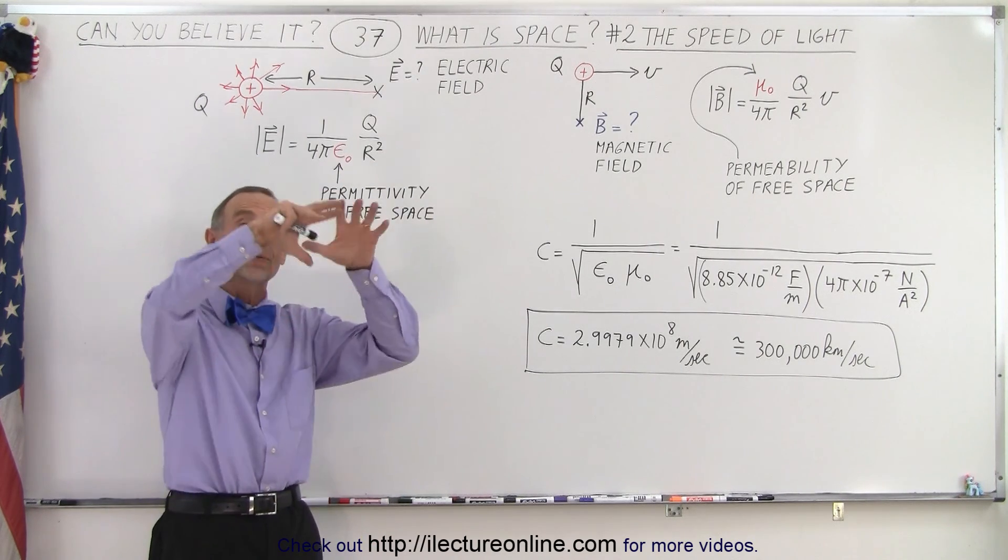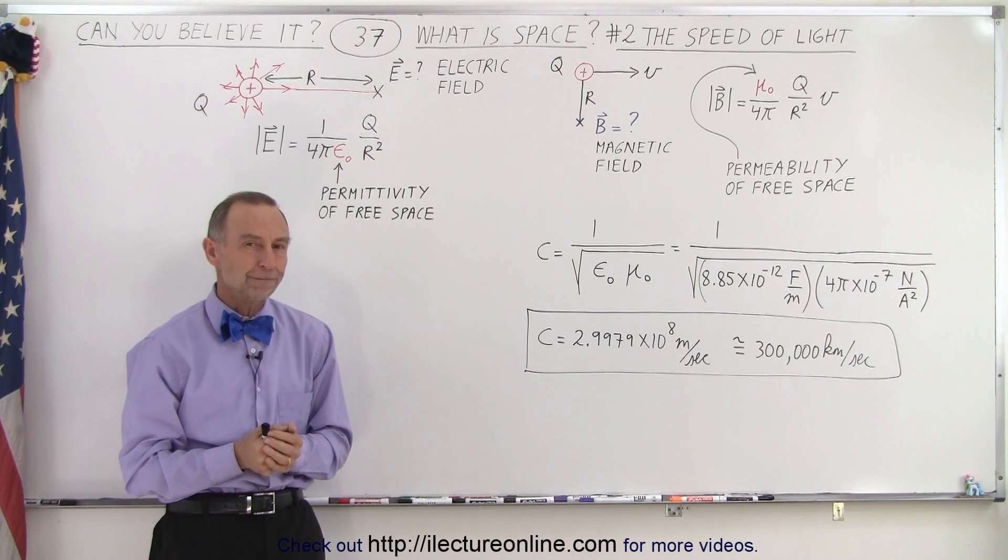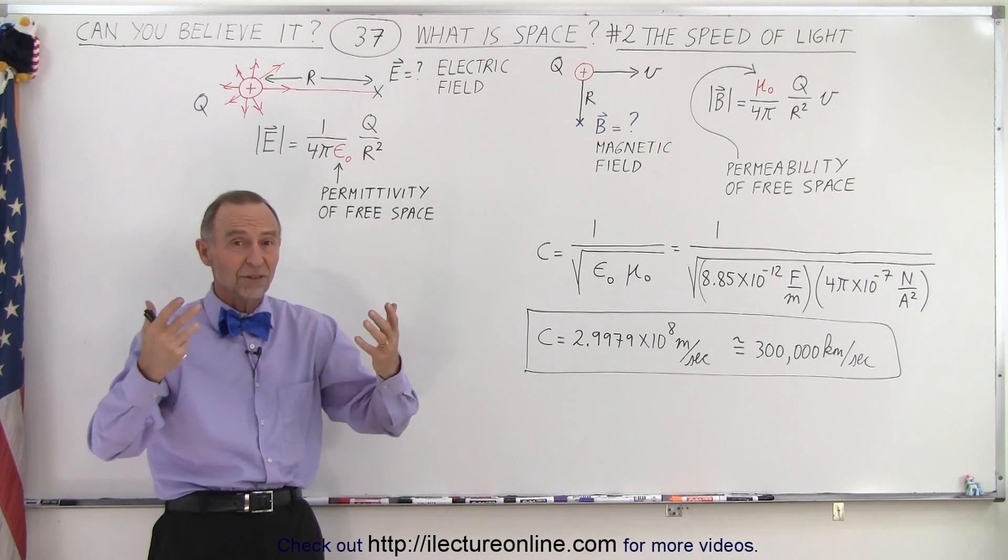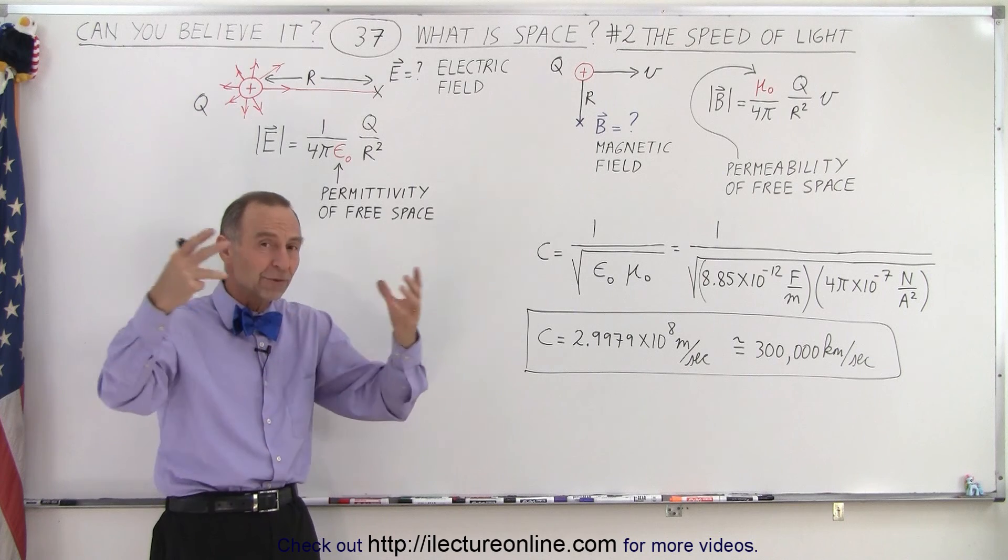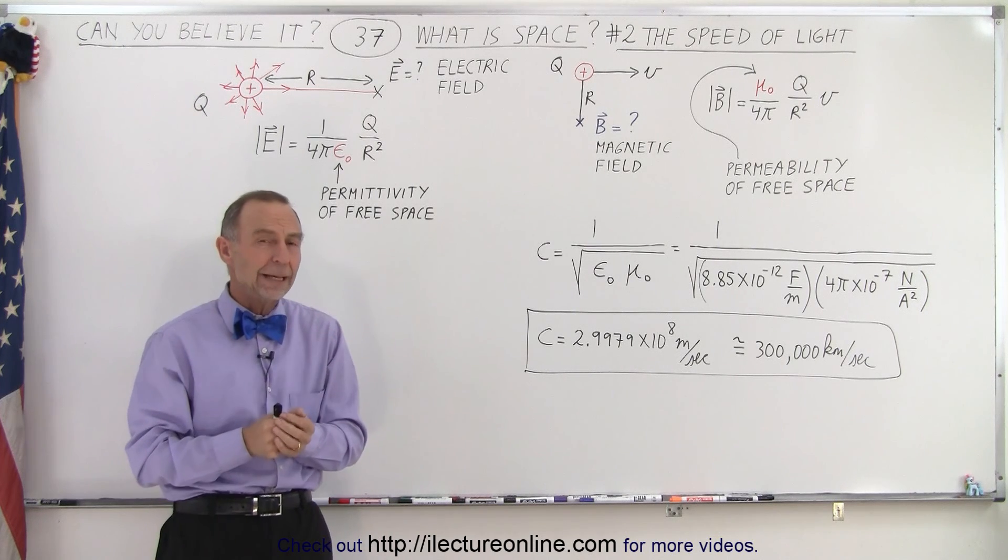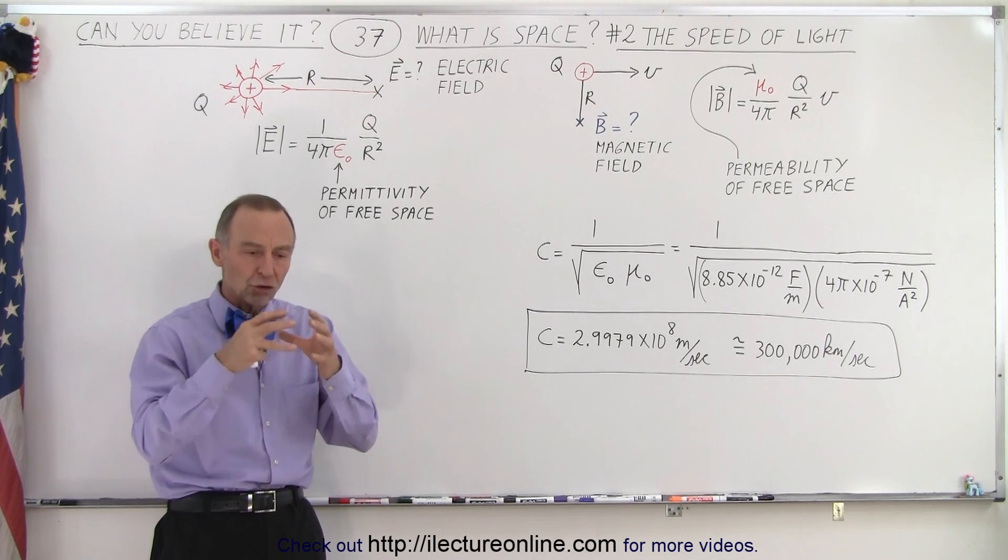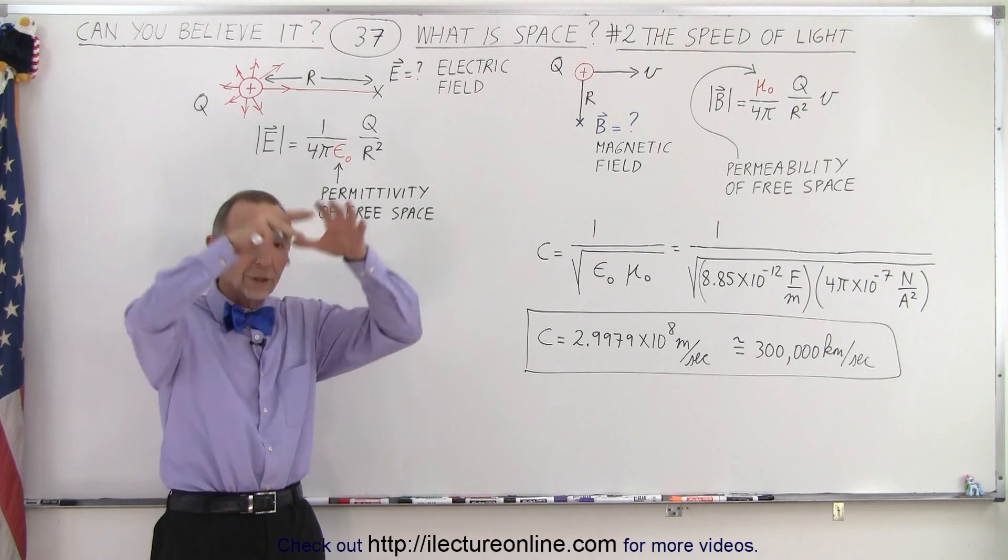As we go into space, there are charges in space. There's atoms floating around—they have charges on them. And so around a charged object you will have an electric field.